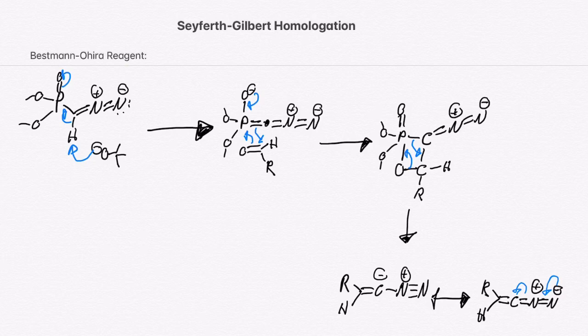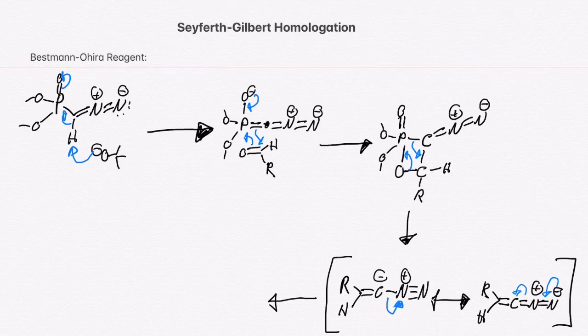Paying attention to the left side of those two resonance structures, we have N2, which is going to leave as nitrogen gas. The reason that this is so interesting is because, once this leaves, we're going to have a carbene formed.